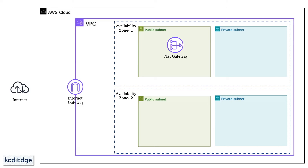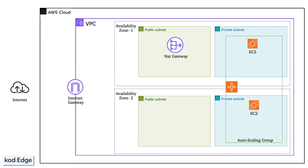The NAT Gateway allows private subnet resources to access the internet securely. After that, we will create and deploy an Auto Scaling Group in a private subnet for security. The Auto Scaling Group will launch EC2 instances. On each EC2 instance, we will deploy an Apache HTTP server with a simple HTML test application that returns a response to confirm everything is working.